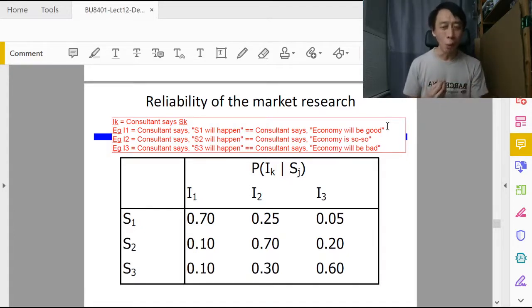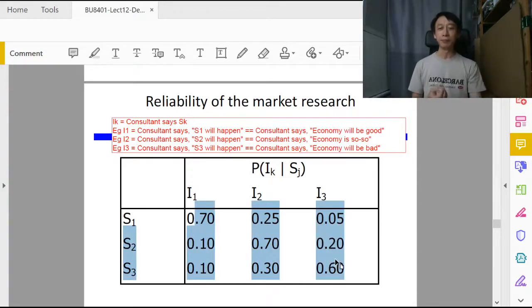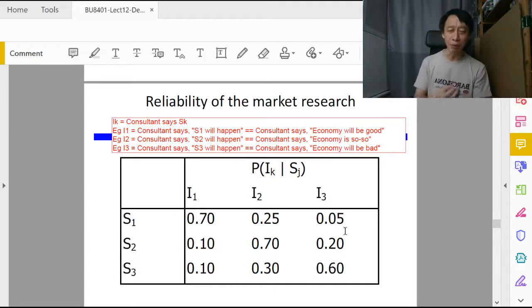So the thing is, how do we make use of this and what are all these numbers? Now that we know what's I1, I2, I3, how do we get this, how do we make sense of it?